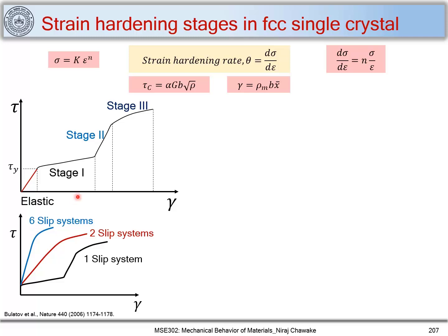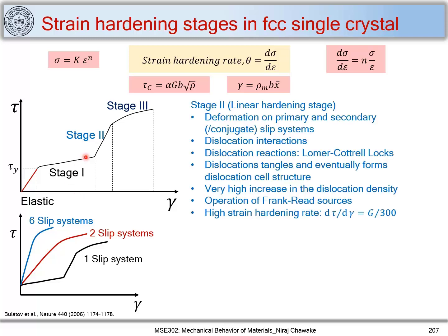In stage two, deformation occurs on primary slip systems and also on secondary or conjugate slip systems. As a result, there are dislocation interactions — dislocations moving on primary and secondary slip systems intersect and interact with each other, leading to significant dislocation interaction.